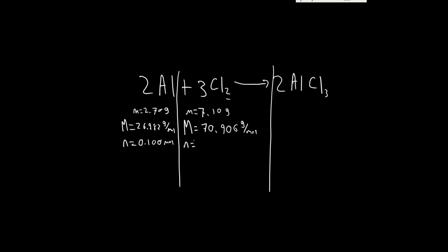So number of moles, 7.1 grams divided by 70.906 grams per mole. We're going to get, again, about 0.100 moles. So we got about the same, we'll say it's the same anyway, approximately.